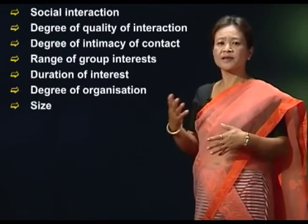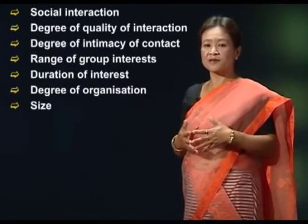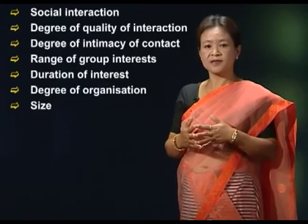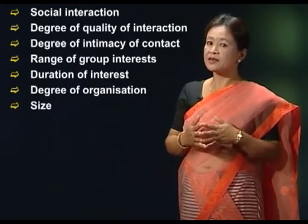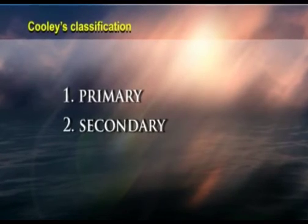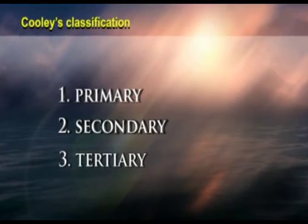Groups range from highly developed organizations as the modern factory to a largely unorganized temporary crowd and permanent class. In the classification of human groups, one of the broadest and most fundamental distinctions is that between small and intimate groups on the one hand and large and impersonal groups on the other. In this module, I shall discuss Cooley's classification of groups into primary, secondary and tertiary on the basis of the degree of intimacy of contact, which is one of the most widely utilized concepts of sociological groups.